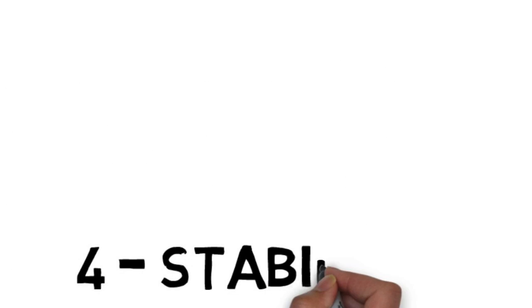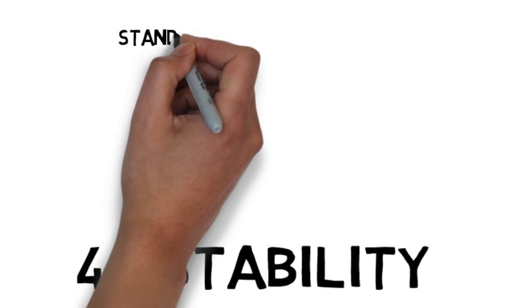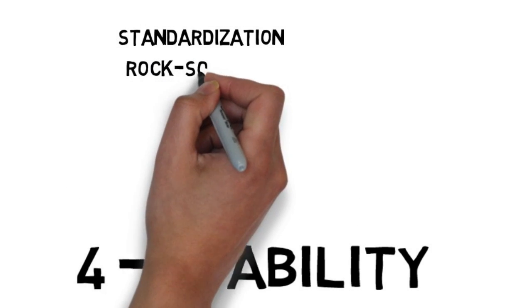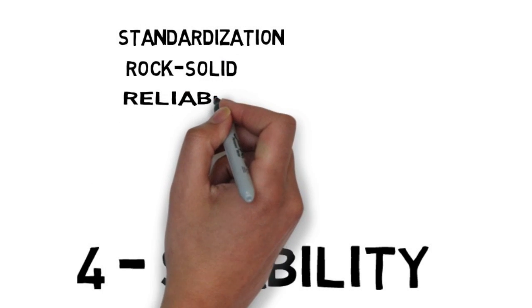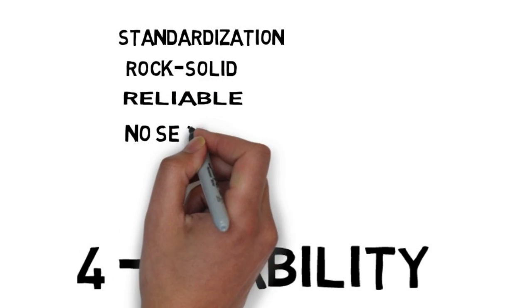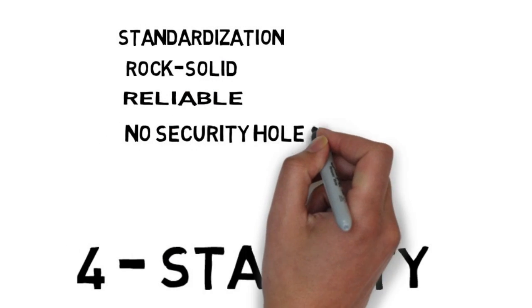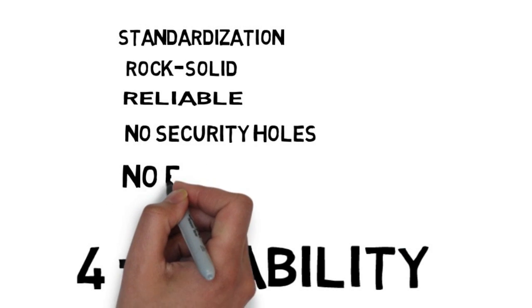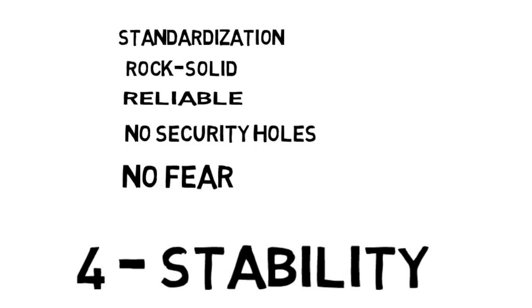Four: stability. Standardization and years of successful use in a variety of areas shaped ASN-1 to be rock-solid and super reliable, even for mission-critical systems. No security holes, no room for ambiguity, and no fear of miscommunication.